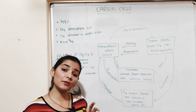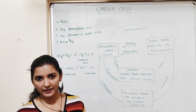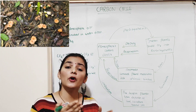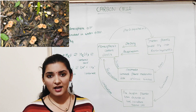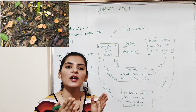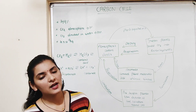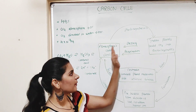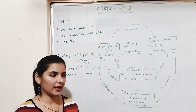Most of the carbohydrates remain in the plant body until the death of the plant or algae. Once the plant dies, its body parts are fed upon by decomposers like fungi and bacteria, which convert complex carbohydrates into simpler forms. Some carbon is released as carbon dioxide into the atmosphere as a result of this decomposition, and the remaining carbon ultimately reaches the soil.